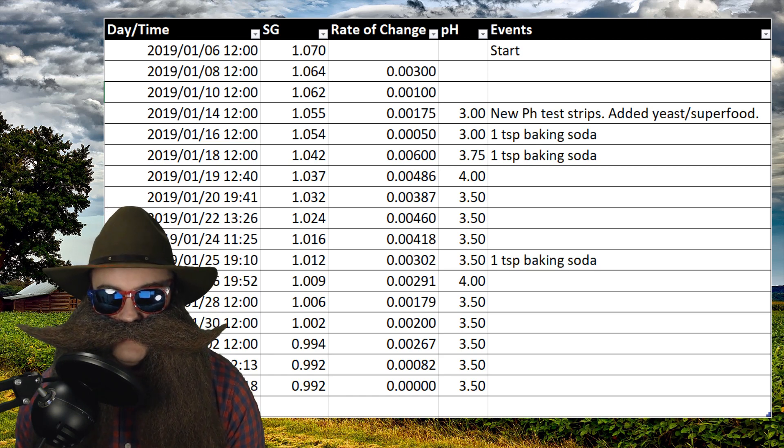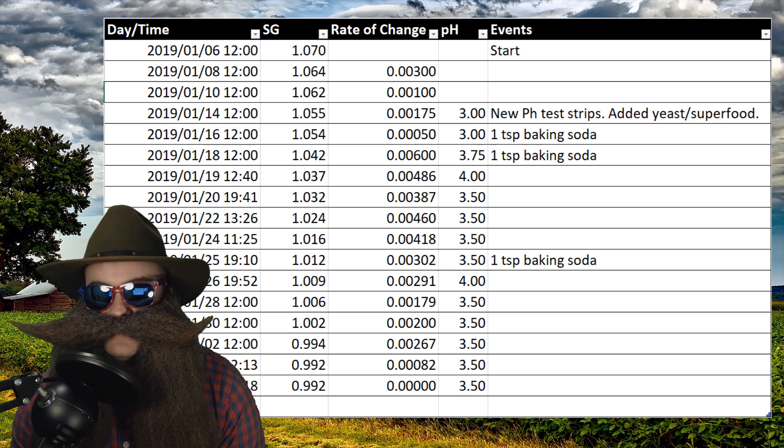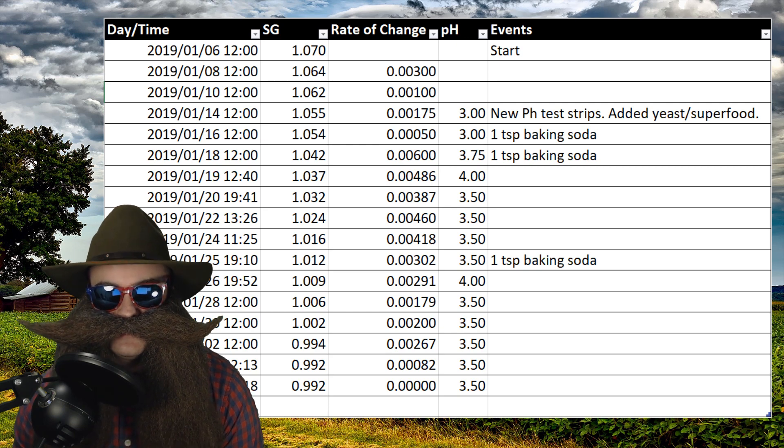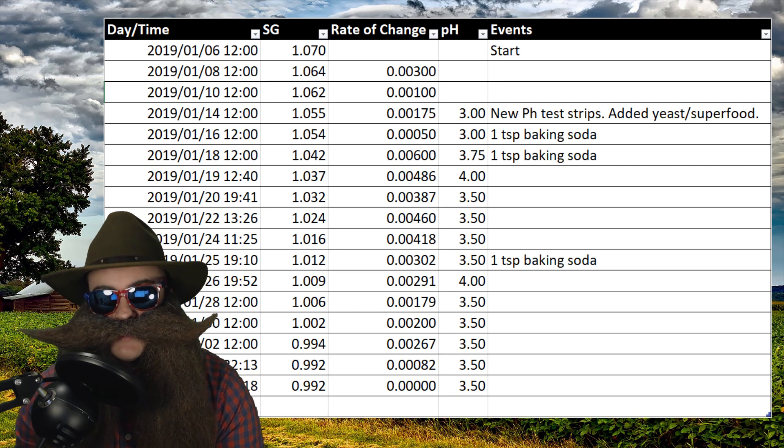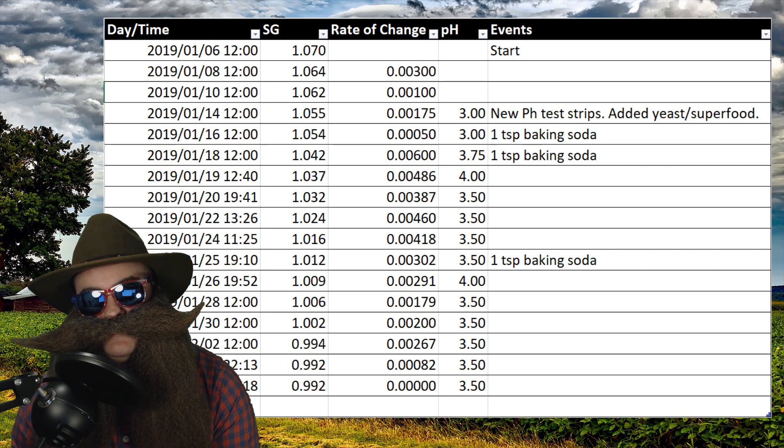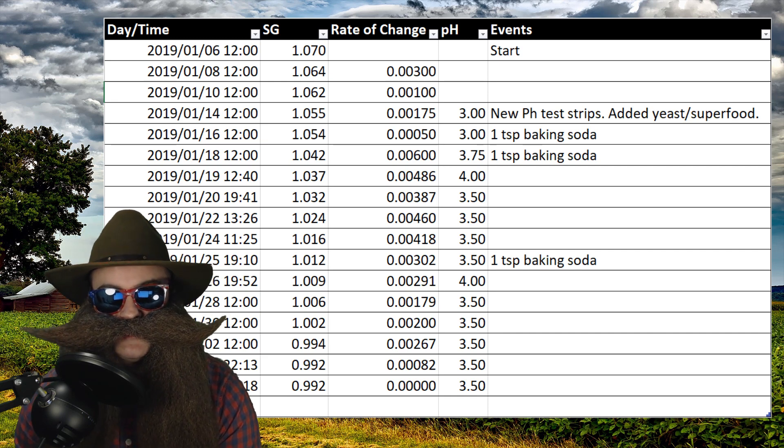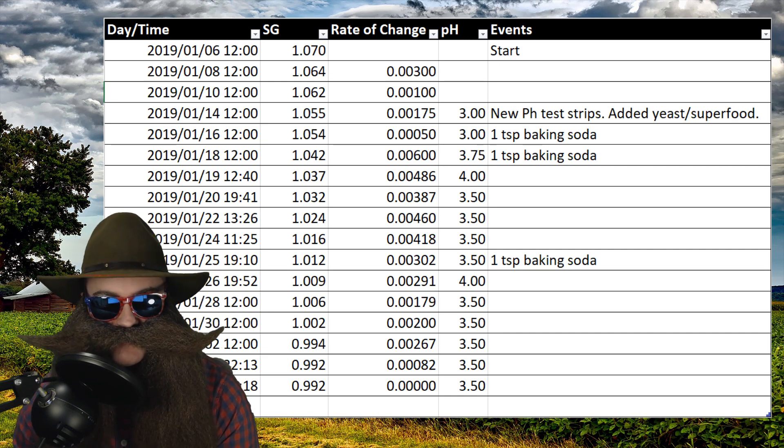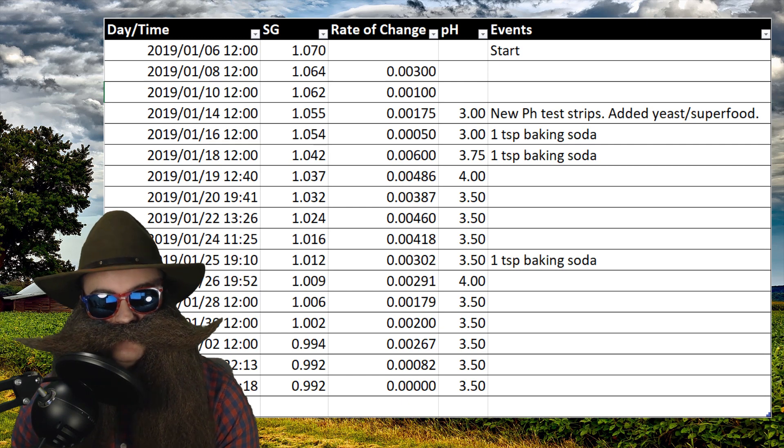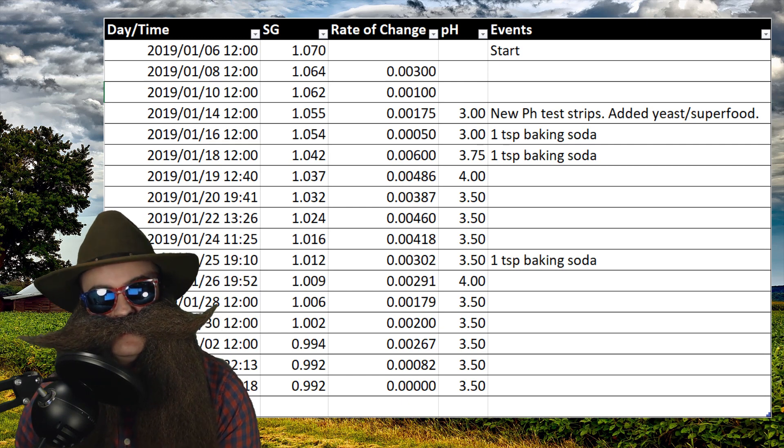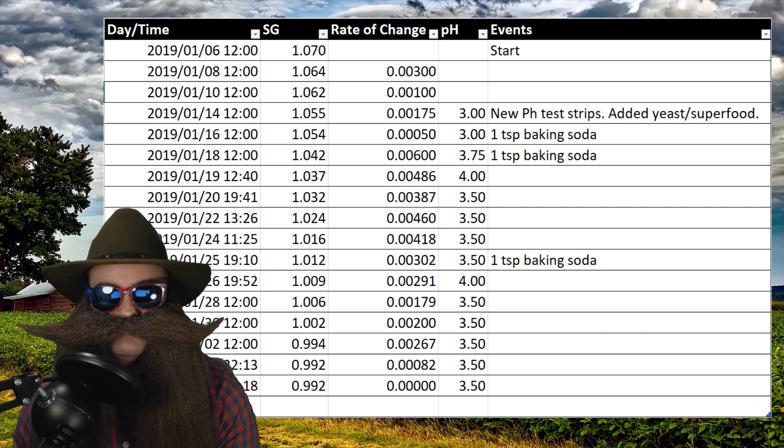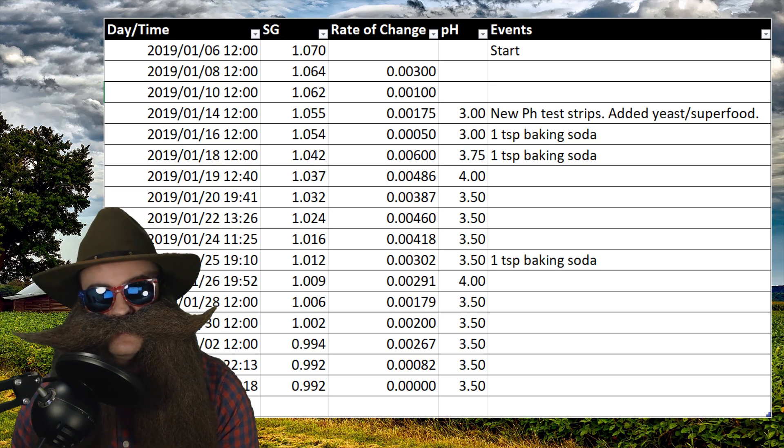In the fourth column we have pH readings, and I've excluded readings from my old inaccurate expired pH testing strips. Where we do see pH readings in the data table, they are from newly purchased non-expired pH test strips, affiliate link down below. The last column is where I recorded events that took place during the fermentation process.